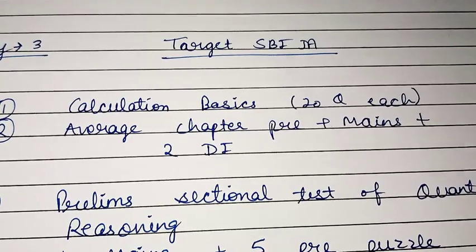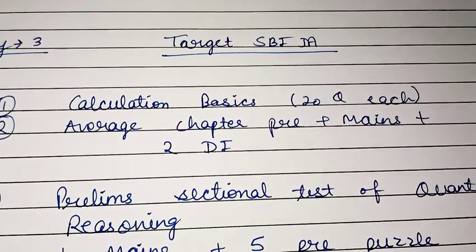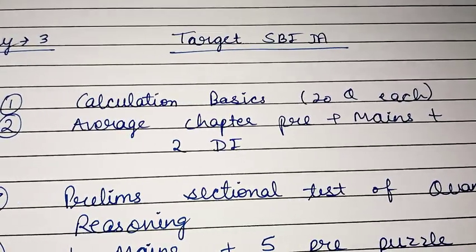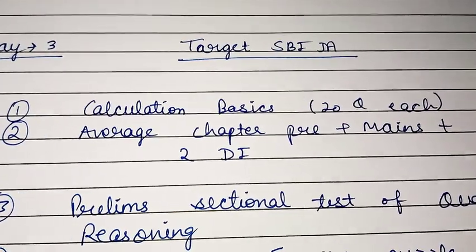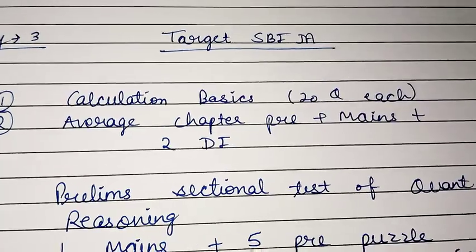Then you will attempt prelims sectional mock test of quant and reasoning. You can skip English in the mock if you do not have sectional mocks because for English you are only following the 60 days plan, and it is more than sufficient for you. Try to go according to that 60 days plan.